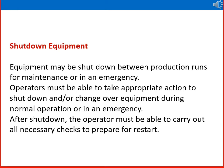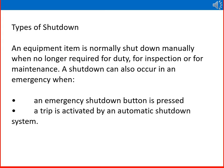Equipment must be shut down between production runs for maintenance or in an emergency. Operators must be able to take appropriate action to shut down or change over equipment during normal operation or in an emergency. After shutdown, the operator must carry out all necessary checks to prepare for restart. An equipment item is normally shut down manually when no longer required for duty, for inspection, or for maintenance. A shutdown can also occur in an emergency when an emergency shutdown button is pressed or a trip is activated by an automatic shutdown system.